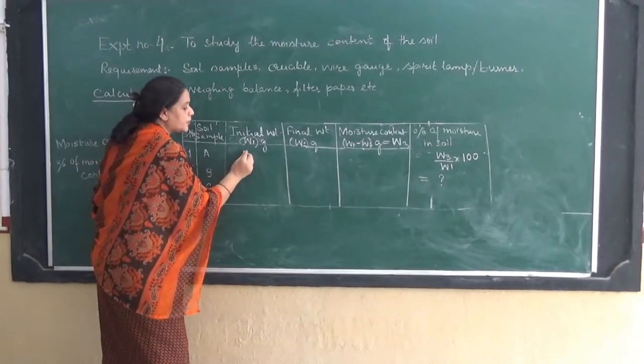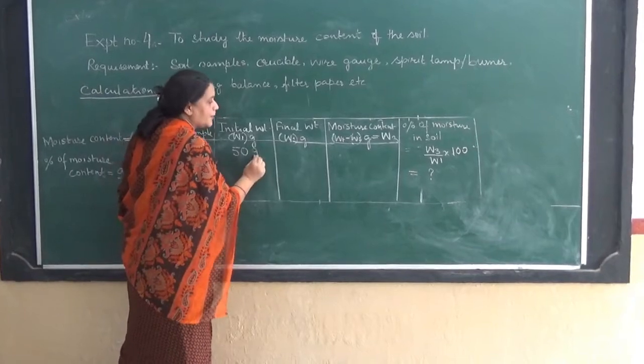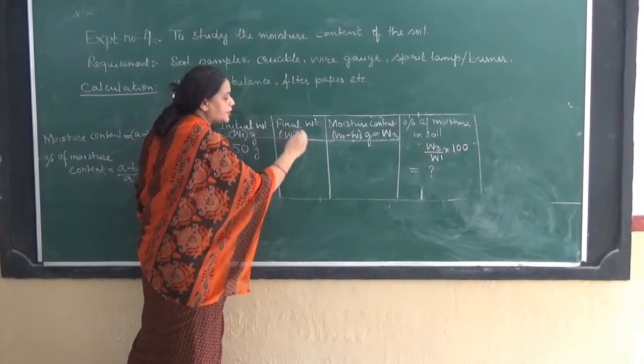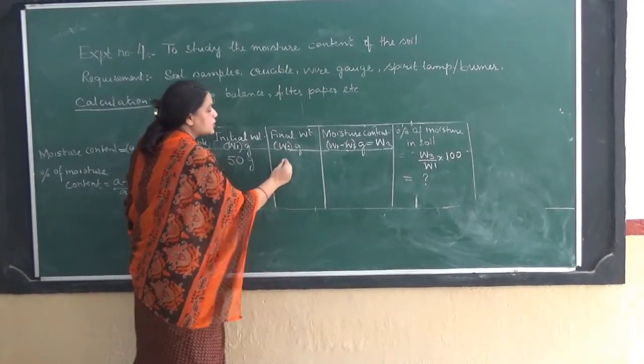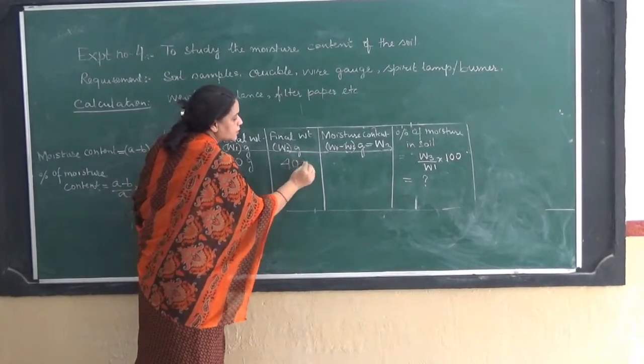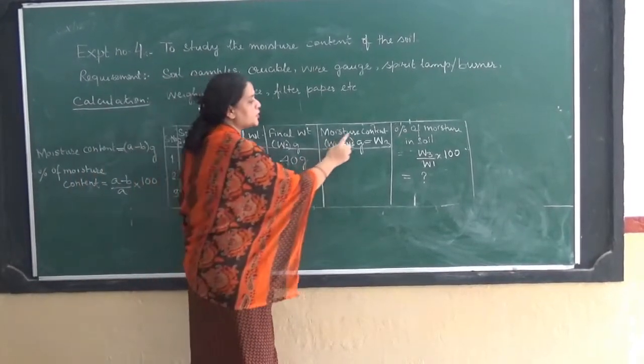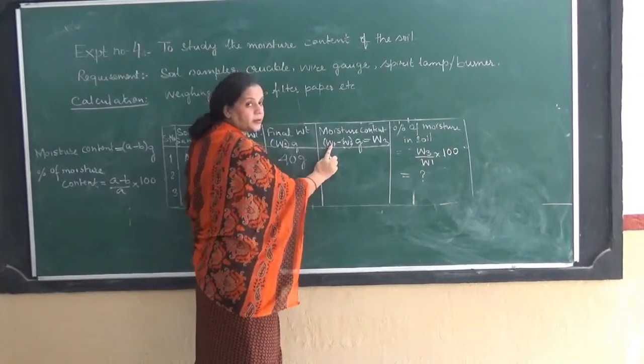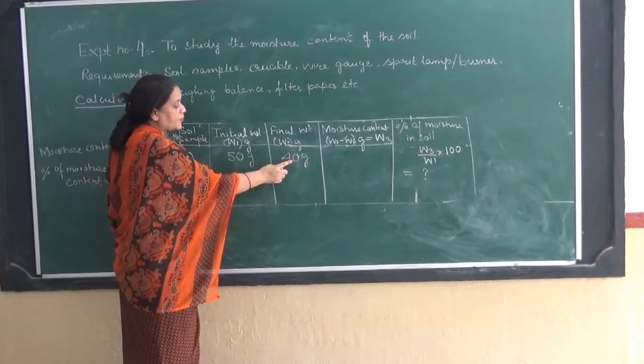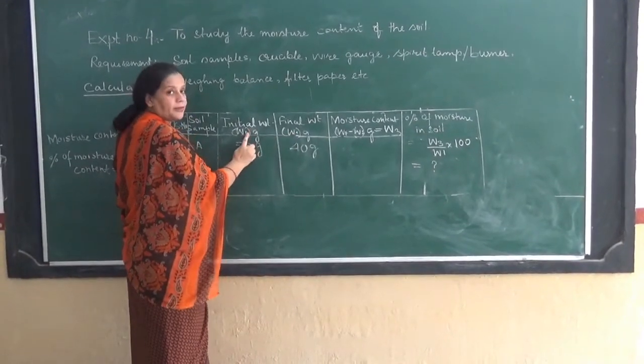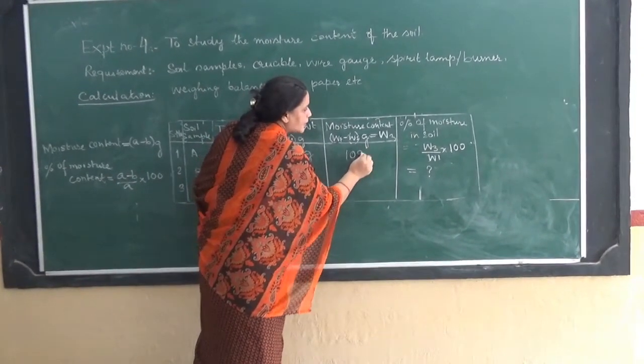So the initial weight as you must be remembering is 50 grams. And after heating it the final weight was, how much moisture was lost? 10 grams. So it was 40 grams. Now the moisture content can be calculated by simply subtracting the initial weight and the final weight. We have to subtract W2 from W1. That will be 10 grams.